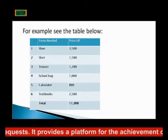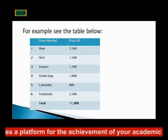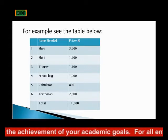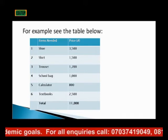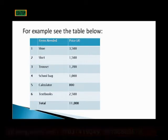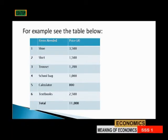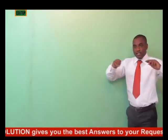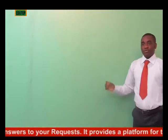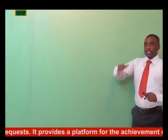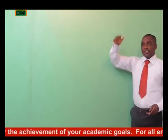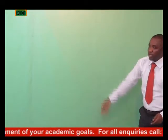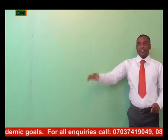For example, look at the table showing the needs of a student. The first item is a shoe costing 3,500 naira; second is a shirt at 1,500 naira; third is a trouser at 1,700 naira; fourth is a school bag at 1,000 naira; fifth is a calculator at 800 naira; and the last is a textbook at 2,500 naira. This list totals 11,000 naira, arranged in order of importance — one after the other. That is what we refer to as scale of preference.